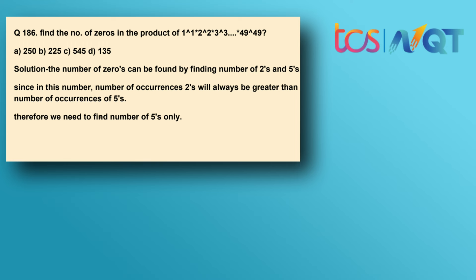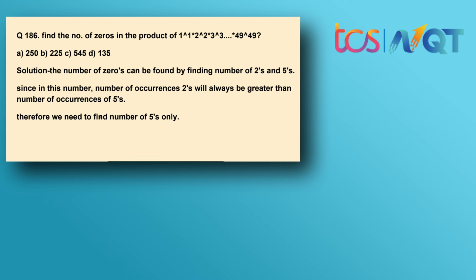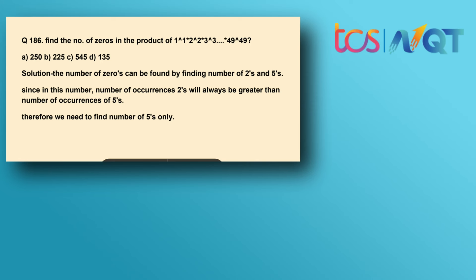The real exam question: find the number of zeros in the product 1^1 × 2^2 × 3^3 × ... × 49^49. This is a third type of problem. As before, find the total number of pairs of 2s and 5s — and since 2s dominate, just find the total count of 5s.